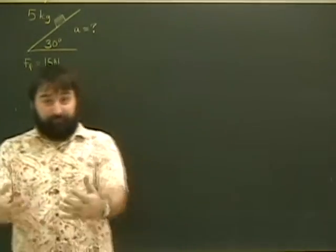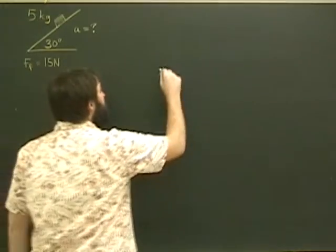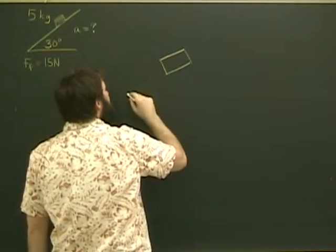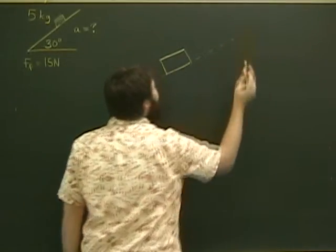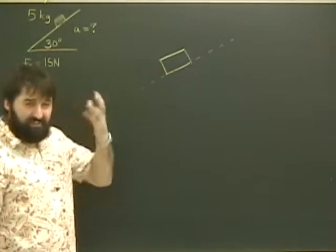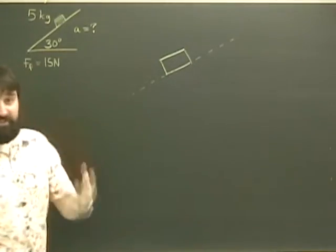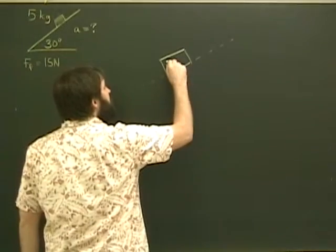So what do we do? First thing we do is draw a free body diagram, just like before. I'm going to indicate the ramp with a little dotted line, just to remind myself that it's there. I'm tilting it a little bit. First question, is there gravity? Well, yes, of course there is.